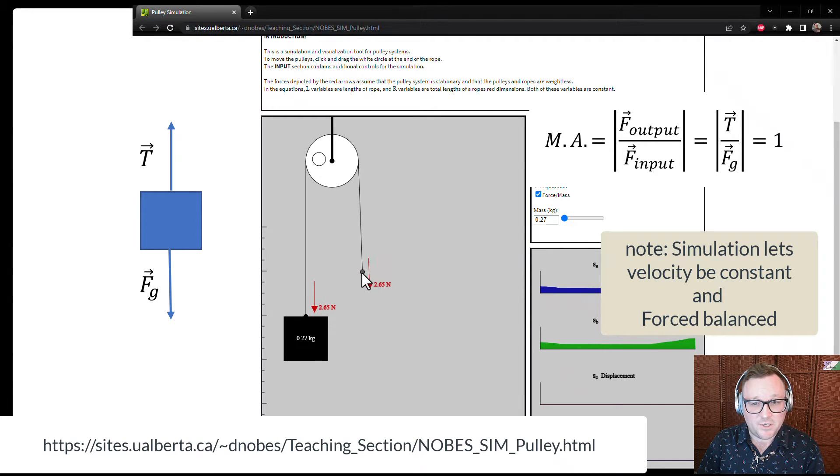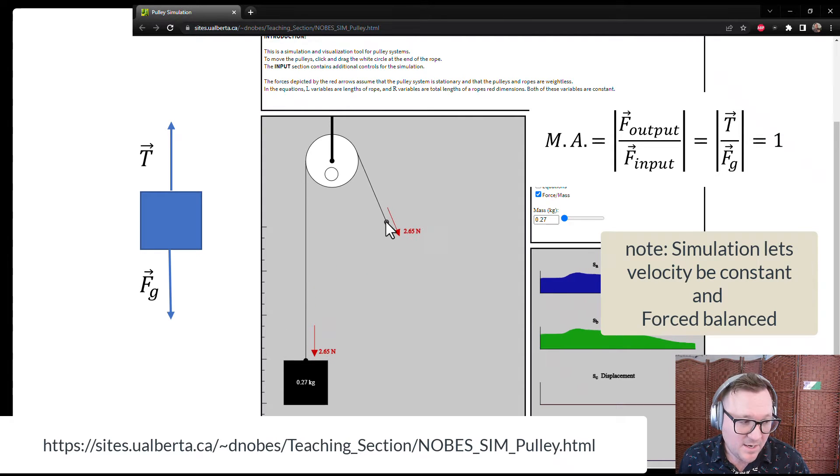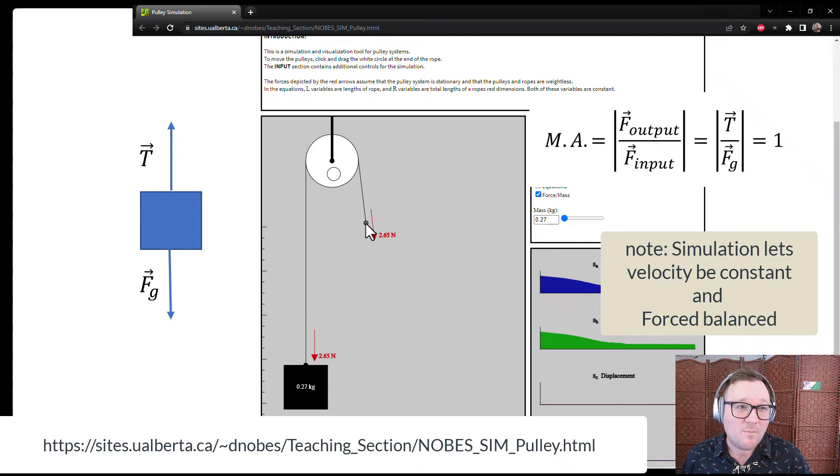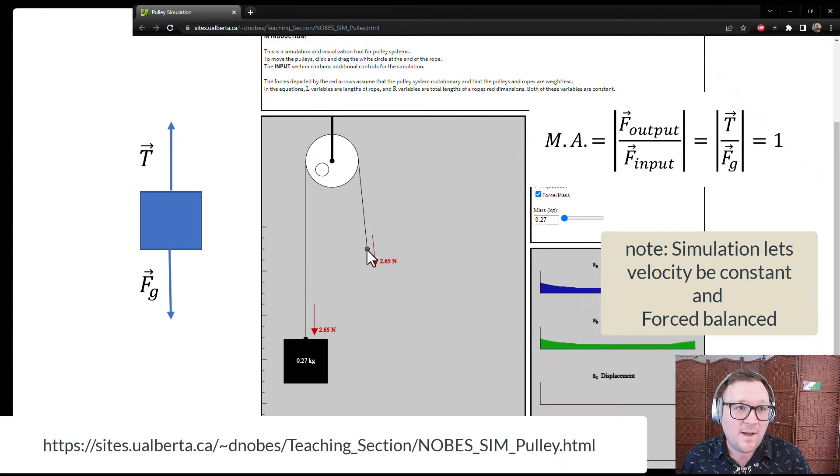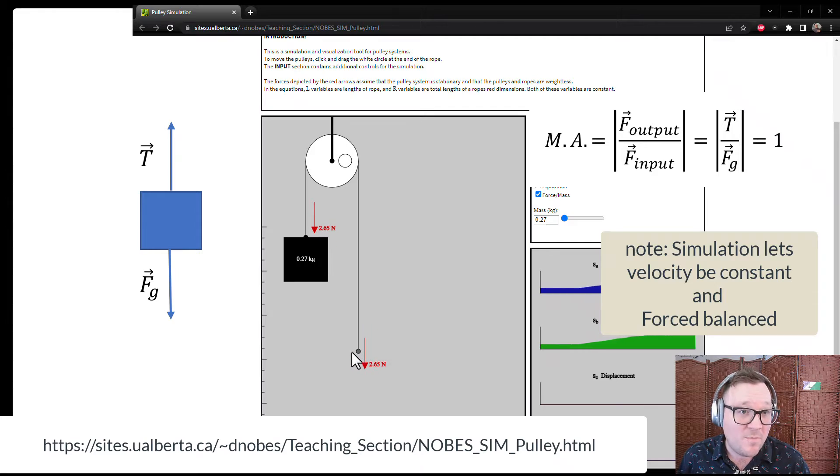The mechanical advantage calculation is the same as the previous case. We have added a pulley, but our output force and our input force are both equal. So, again, we have a mechanical advantage of 1, or no mechanical advantage.